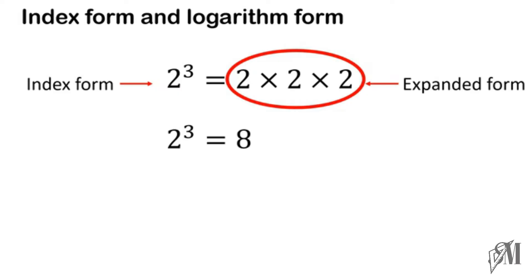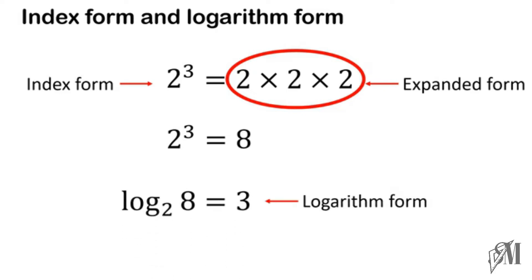Now let's write this in logarithmic form. You have to clearly understand that the bases do not change — the base in the index form is 2 and the base in the logarithmic form is also 2. We read this as log base 2 of 8 is equal to 3. The power in the index form is the answer in the logarithmic form, and the remaining digit is written along with the log base 2 part.